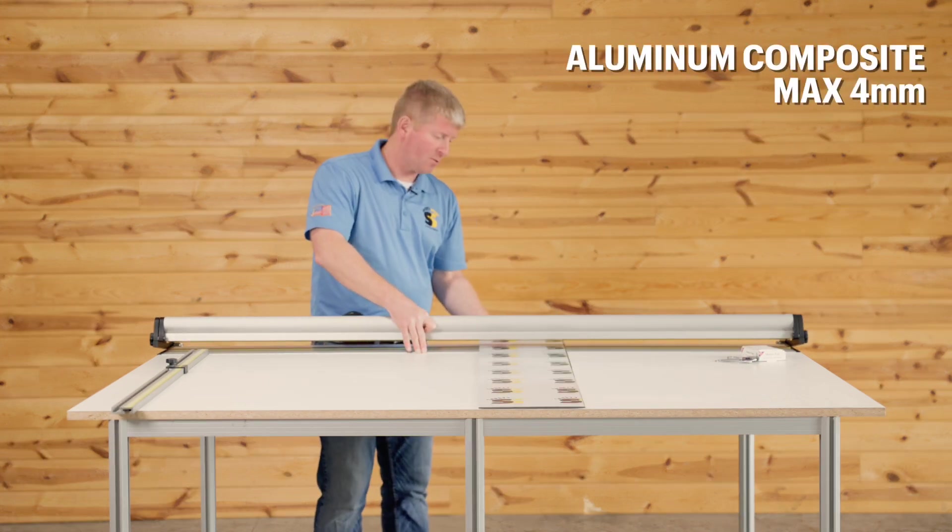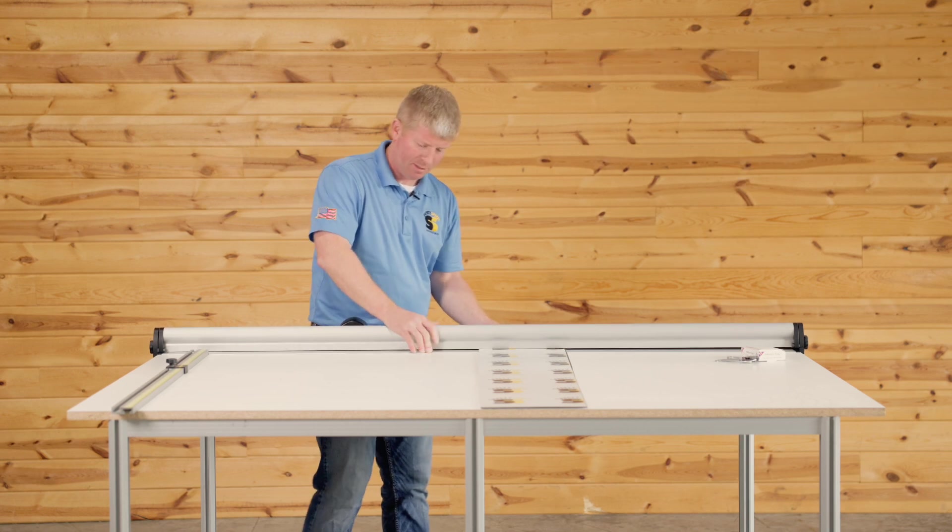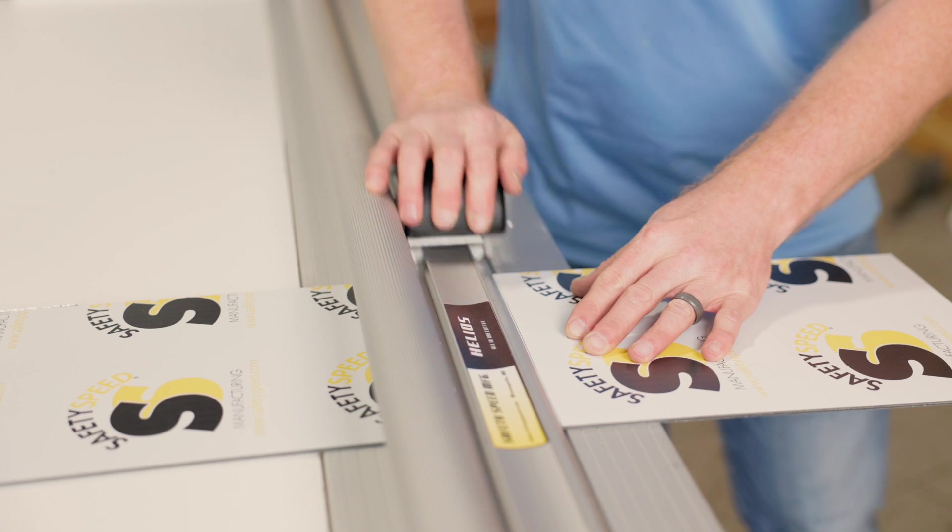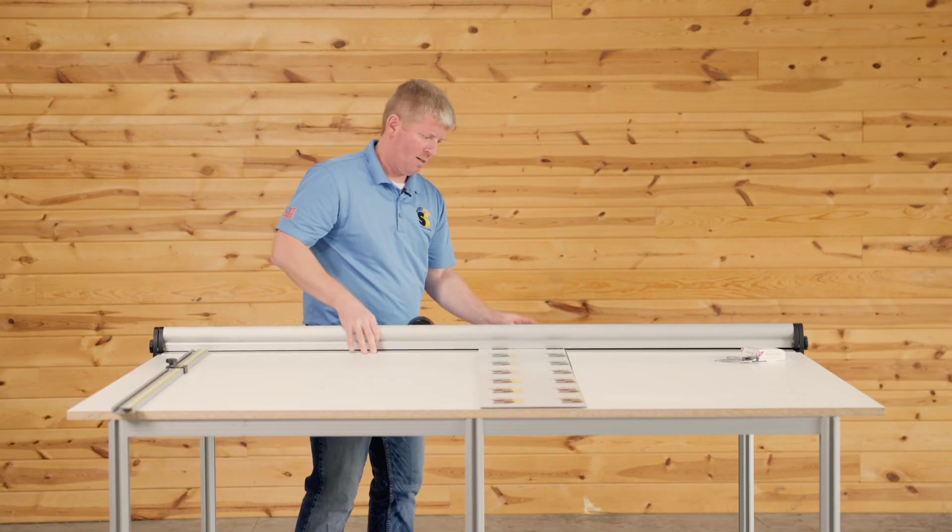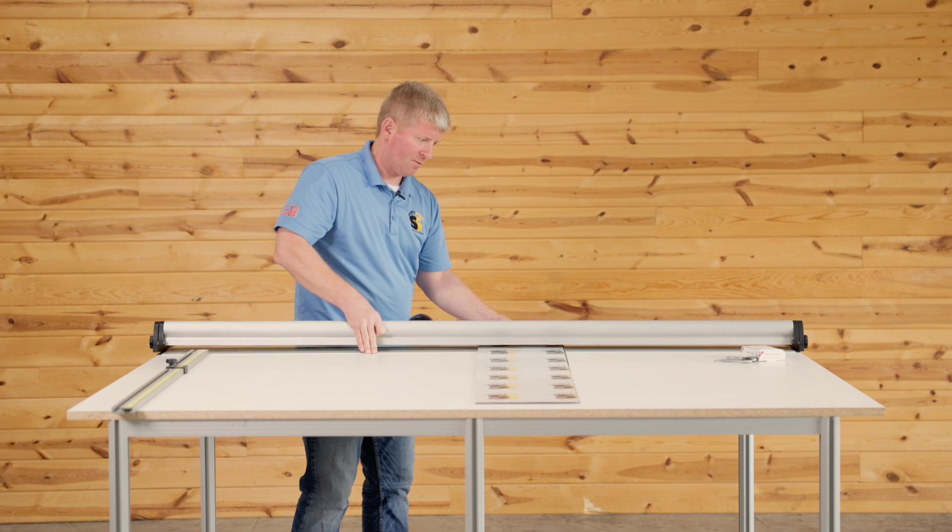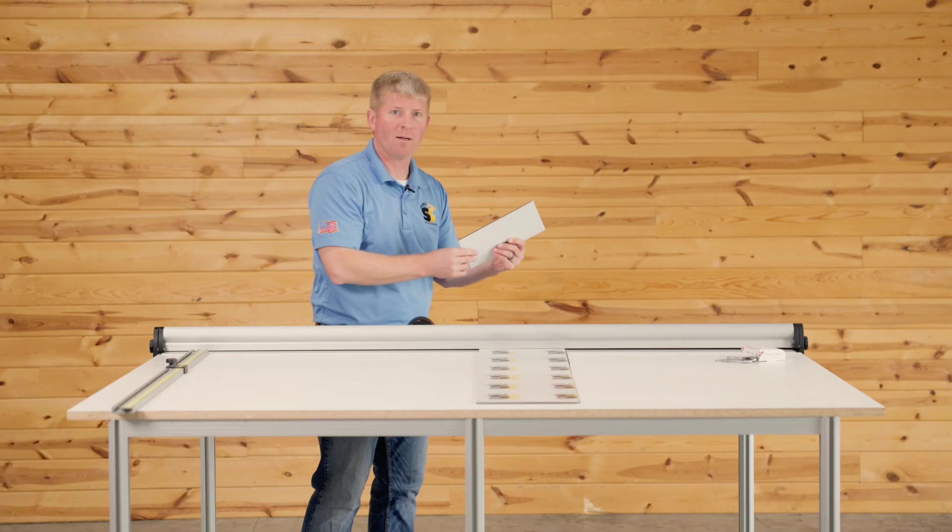Aluminum composite, we'd still use the utility blade and we'd score and then bend to snap it. So depending if it's three or four mil, you might need to make two, maybe three passes. And then I extend it to the edge of the Helios cutter. Just bend that down. That pops right there.